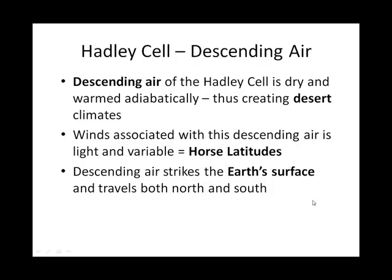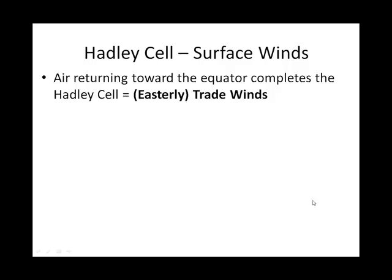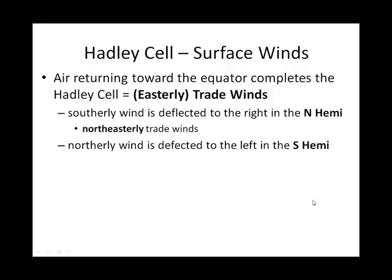That descending air at the end of the Hadley cells in the northern and southern hemisphere then travels along the surface of the Earth both north and south. In the northern hemisphere, the air traveling from about 30 degrees north towards the equator is deflected to the right. This is why we have easterly trade winds at the surface — northeasterly trade winds in the northern hemisphere and southeasterly trade winds in the southern hemisphere.